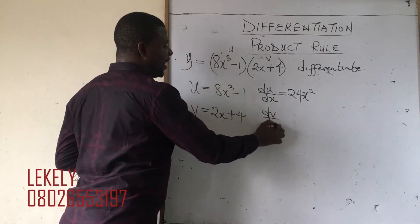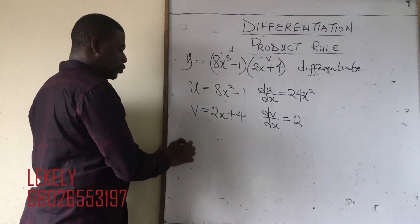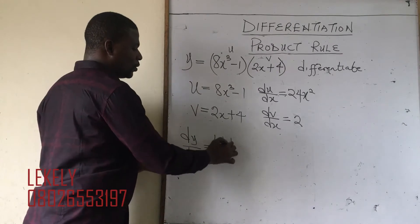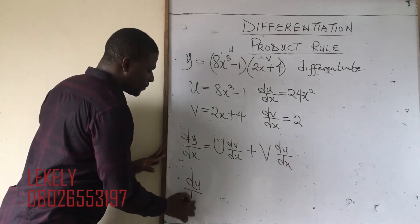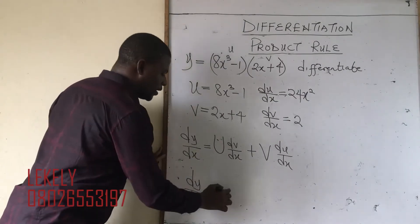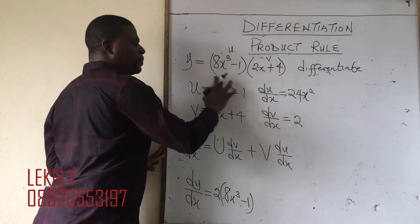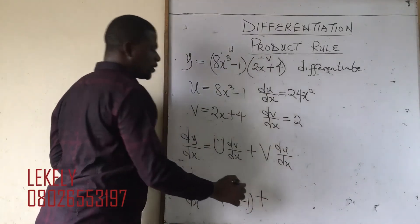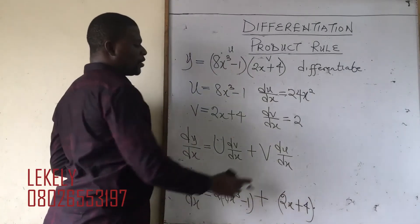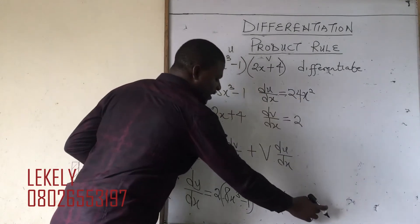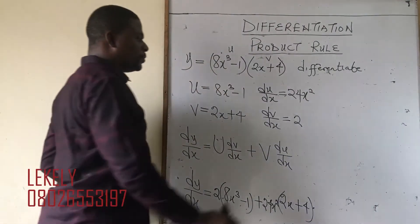We have covered this in our differentiation rules — if you haven't watched those videos go and watch rules 1 and 2. Then for dv/dx: differentiating 2x gives 2, and differentiating 4 gives zero. Following the formula dy/dx equals u·dv/dx plus v·du/dx: our u is 8x³ minus 1, our dv/dx is 2, plus v which is 2x plus 4, times du/dx which is 24x².